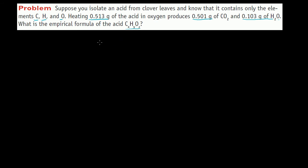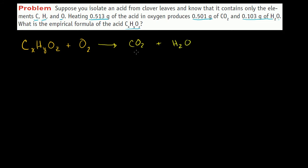Let's write the equation here. We can't balance this equation because we don't know how many carbons, hydrogens, or oxygens we have in the acid. In general terms, we have the acid with x carbons, y hydrogens, and z oxygens, and we're heating it in the presence of an abundance of oxygen. The problem tells us this produces carbon dioxide and water — 0.513 grams of our original substance produces 0.501 grams of carbon dioxide and 0.103 grams of water.